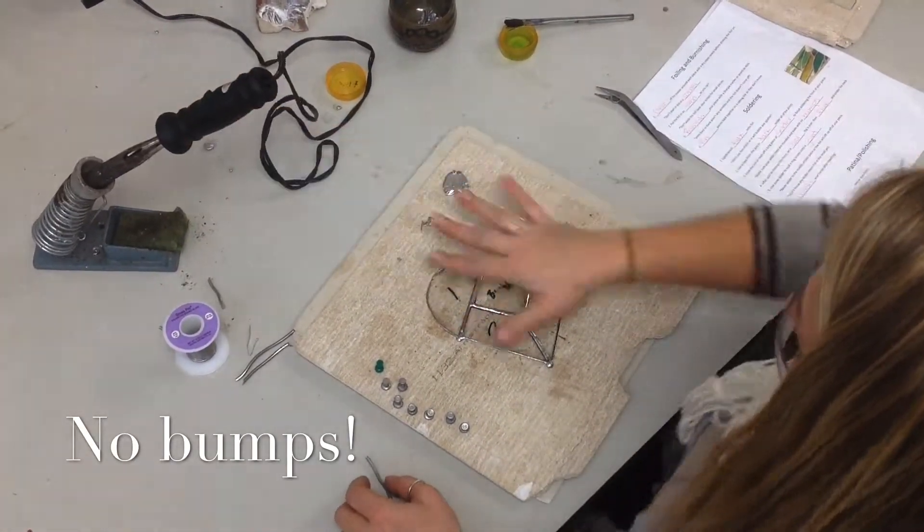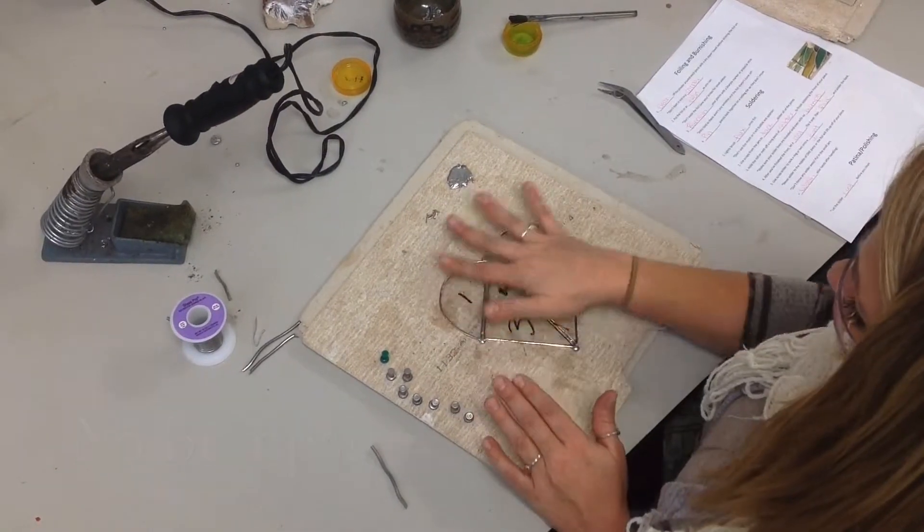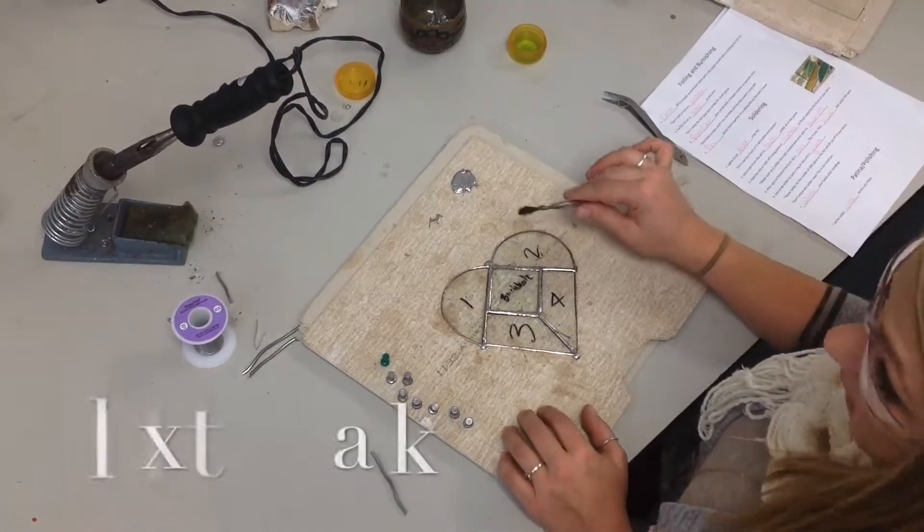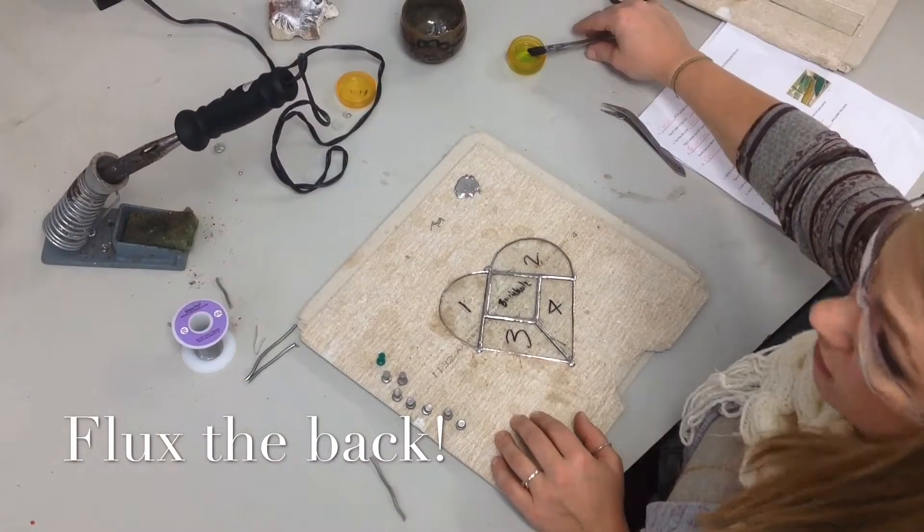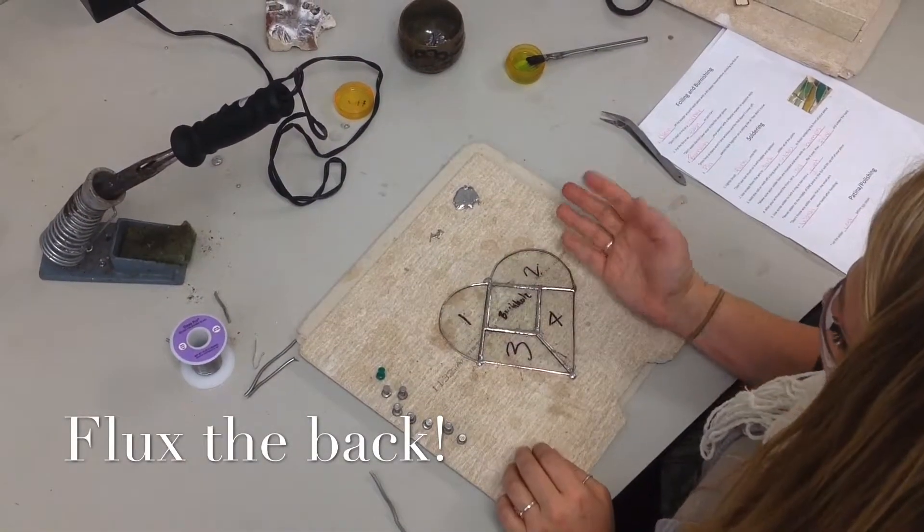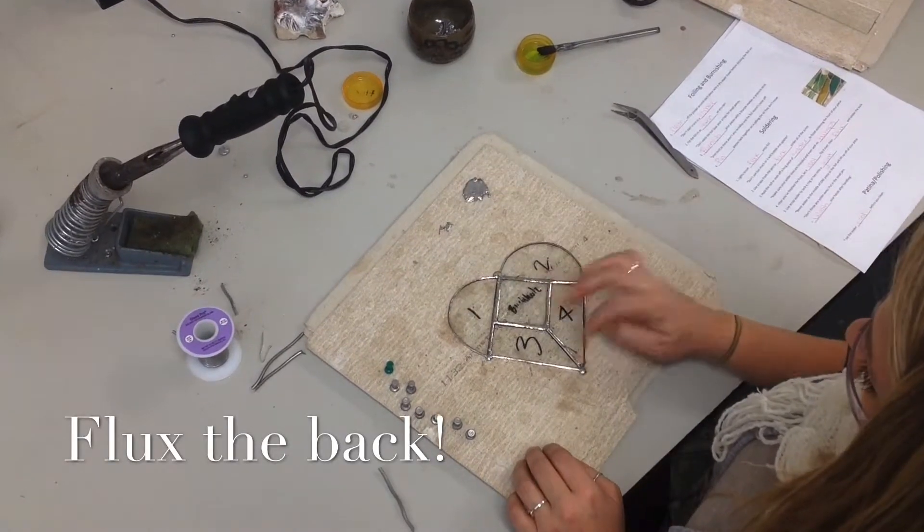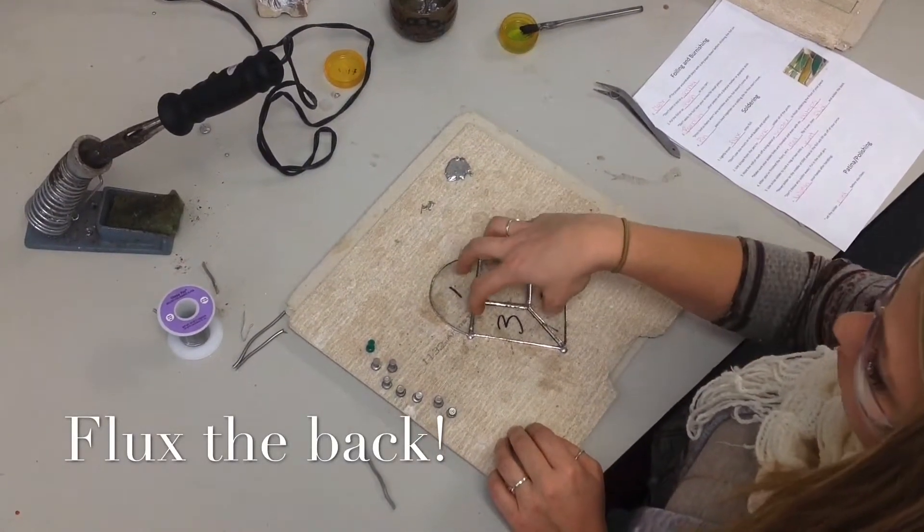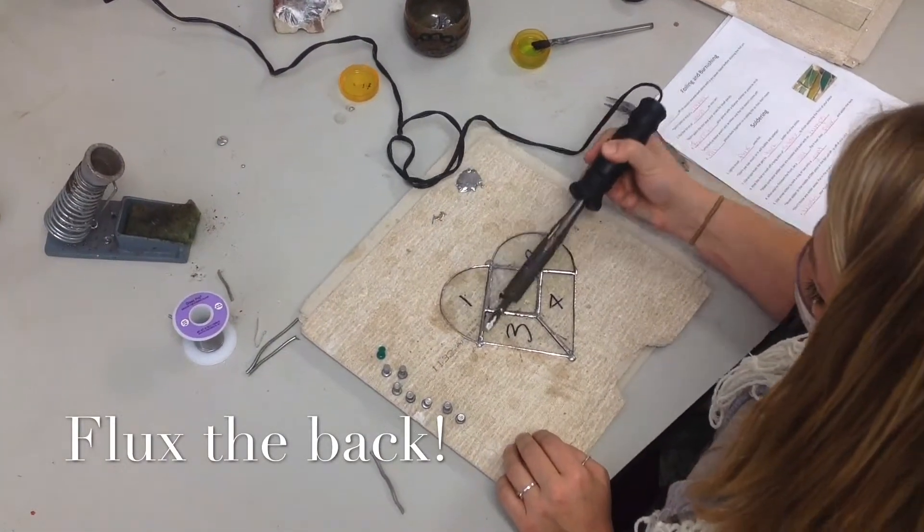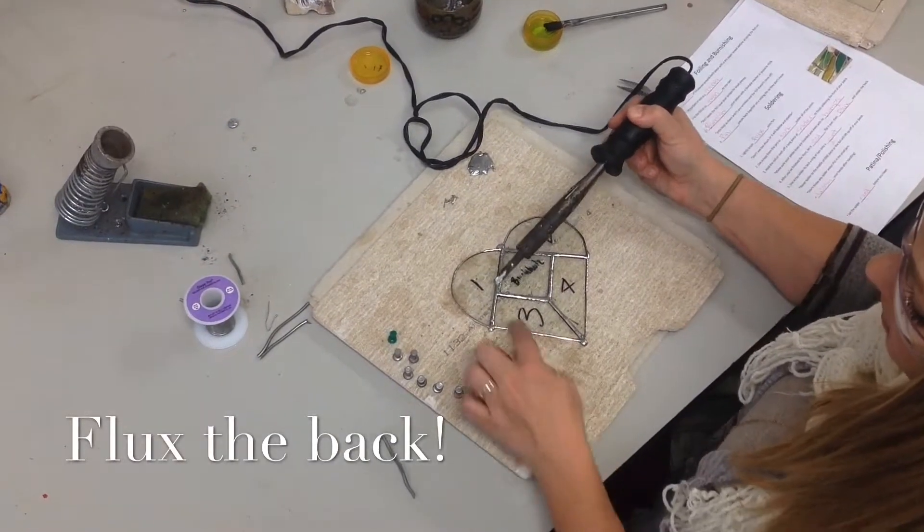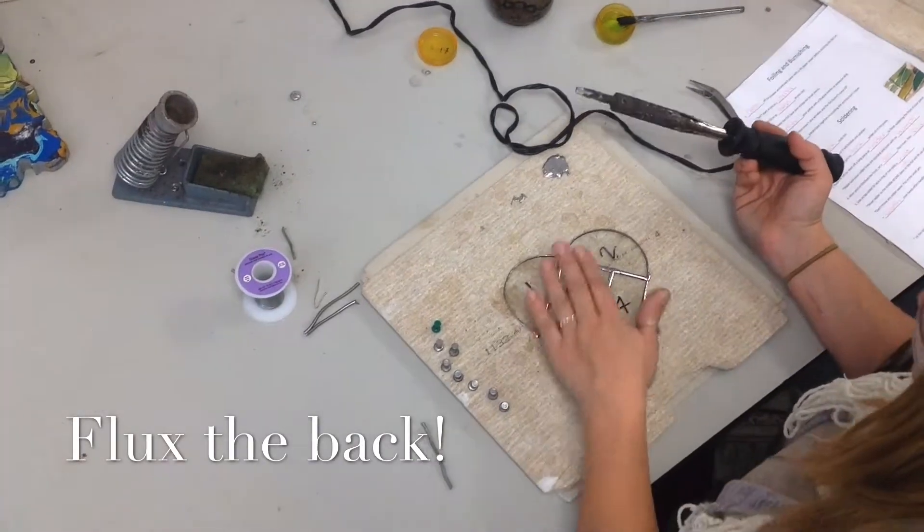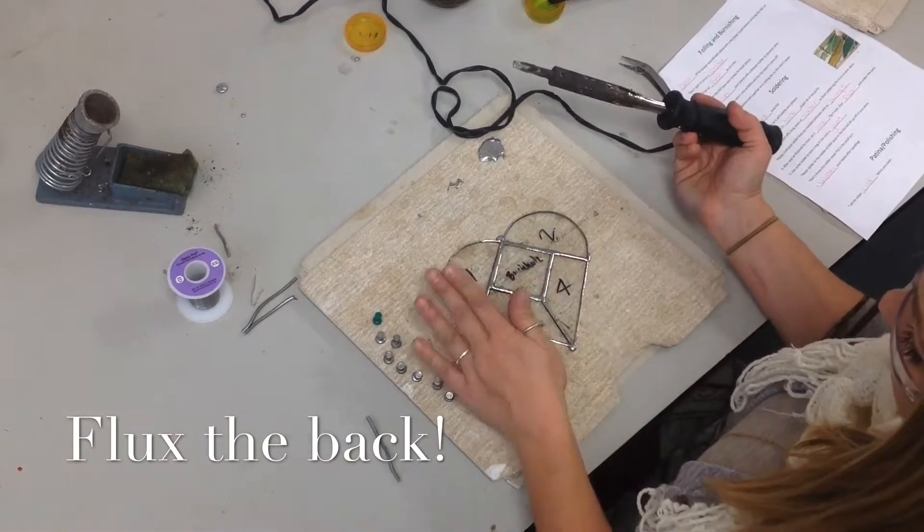After you've done the front, you're going to let this cool down and then you're going to flip it over and you will flux the back side and do the same thing to the back. After you've finished the back, I'll show you guys how to do the sides. You don't ever want to work on your project too long because if you keep going back and refixing these solder lines and your glass gets too hot, your glass will crack. So you never want your project to get too hot. If it gets too hot, just let it cool down and then you can always come back.